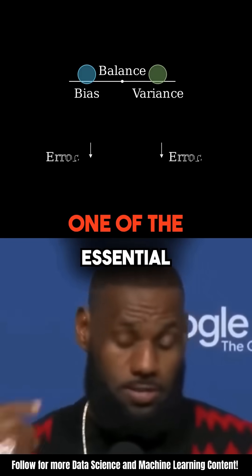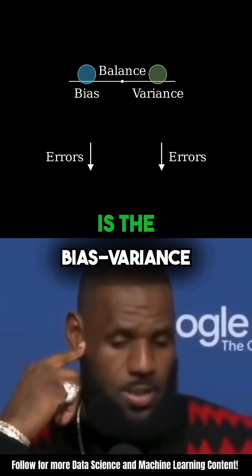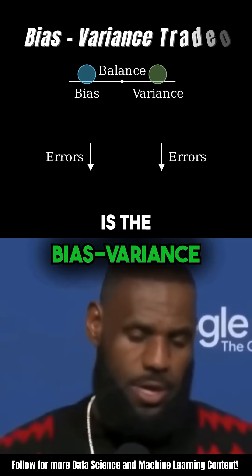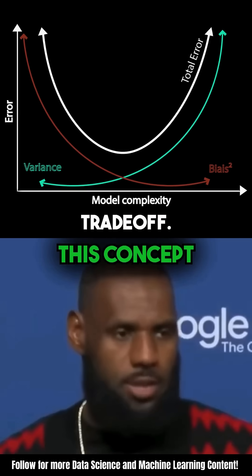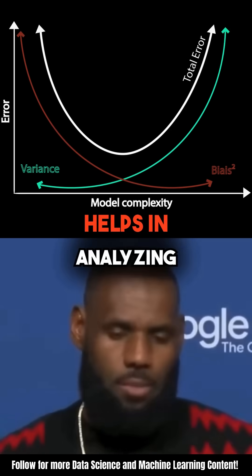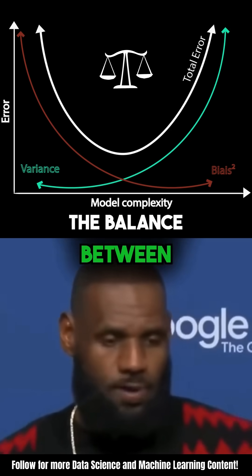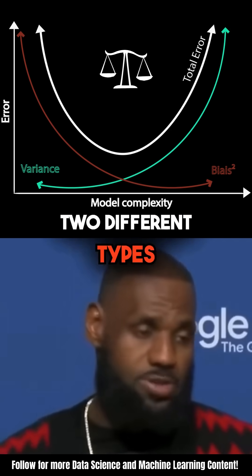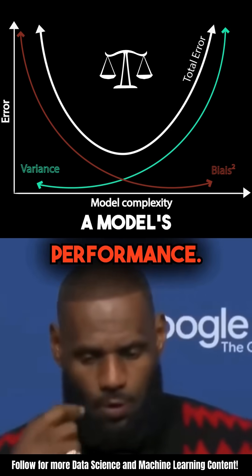In machine learning, one of the essential concepts to understand is the bias-variance trade-off. This concept helps in analyzing the balance between two different types of errors that affect a model's performance.